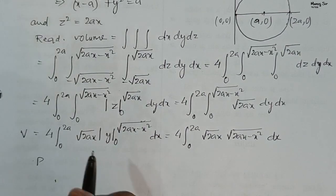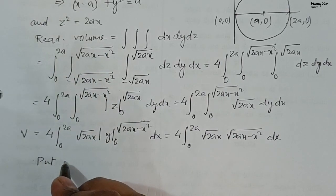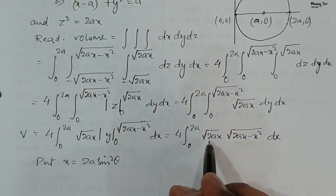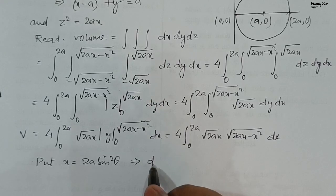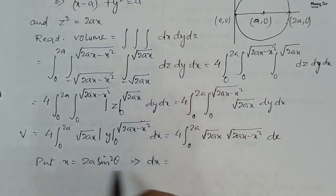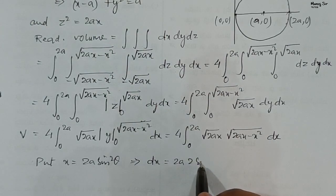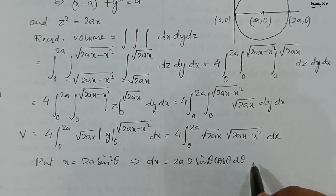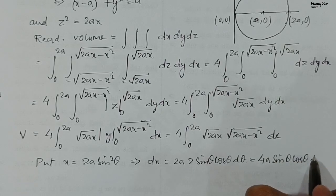To handle the complexity, we use the substitution x = 2a sin²θ. Then dx = 2a · 2sinθ cosθ dθ = 4a sinθ cosθ dθ. When x = 0, sin²θ = 0 so θ = 0; when x = 2a, sin²θ = 1 so θ = π/2. Therefore the x-limits 0 to 2a become θ-limits 0 to π/2.